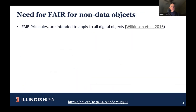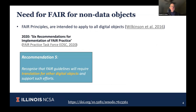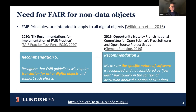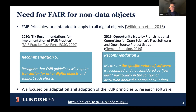For things that aren't data, these processes are different than the assumptions made when the FAIR principles were originally created, and because of that there's work needed to define, implement, and adopt these principles at the level below the top level. The FAIR Practice Task Force at EOSC in 2020 had six recommendations, and recommendation five was to recognize that FAIR guidelines require translation for other digital objects. A 2019 French National Committee for Open Sciences note also recommended that the specific nature of software be recognized and not considered as just data.